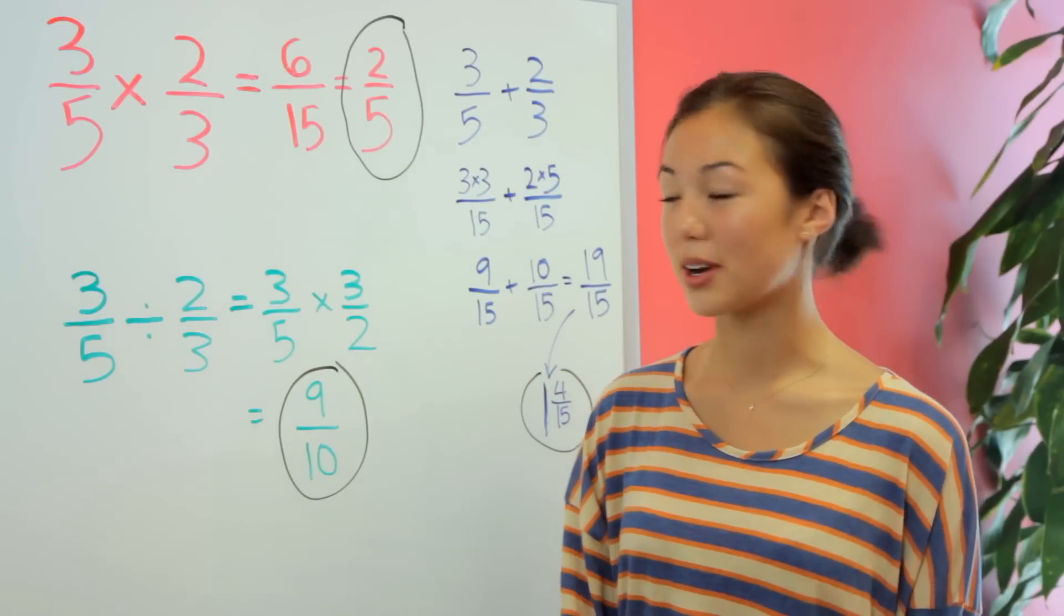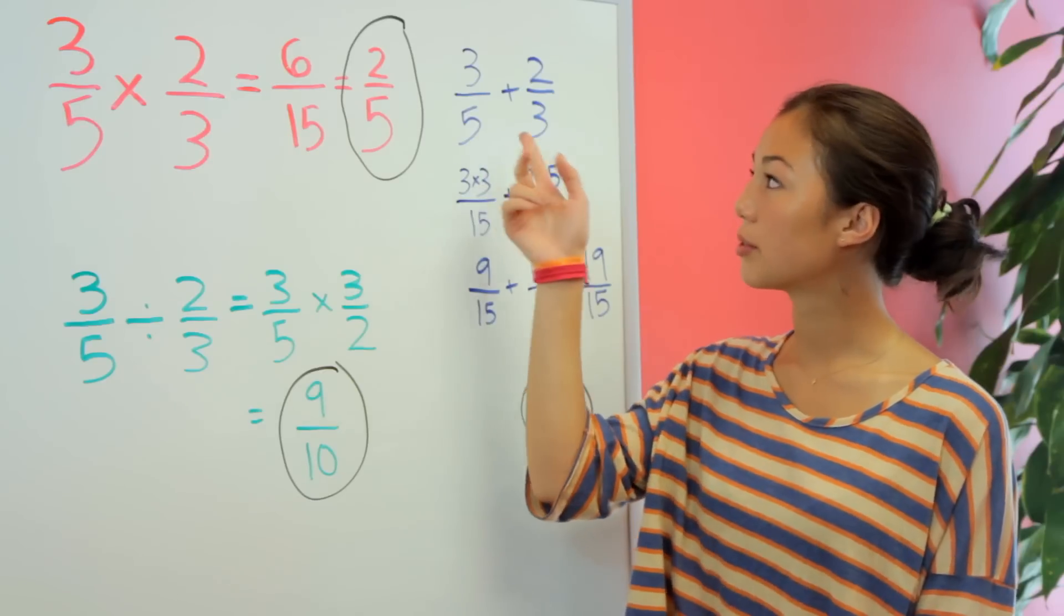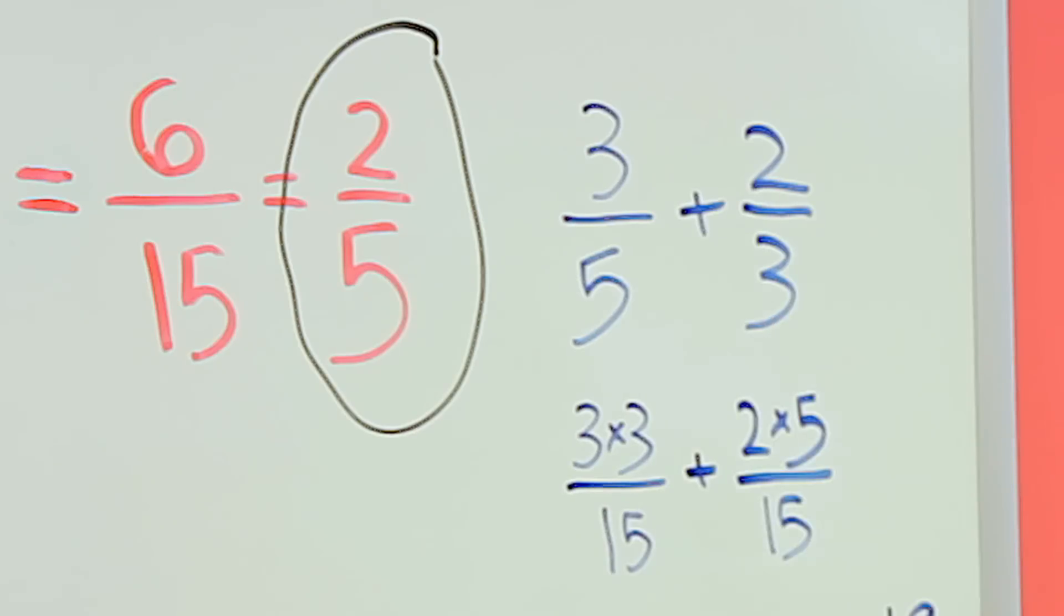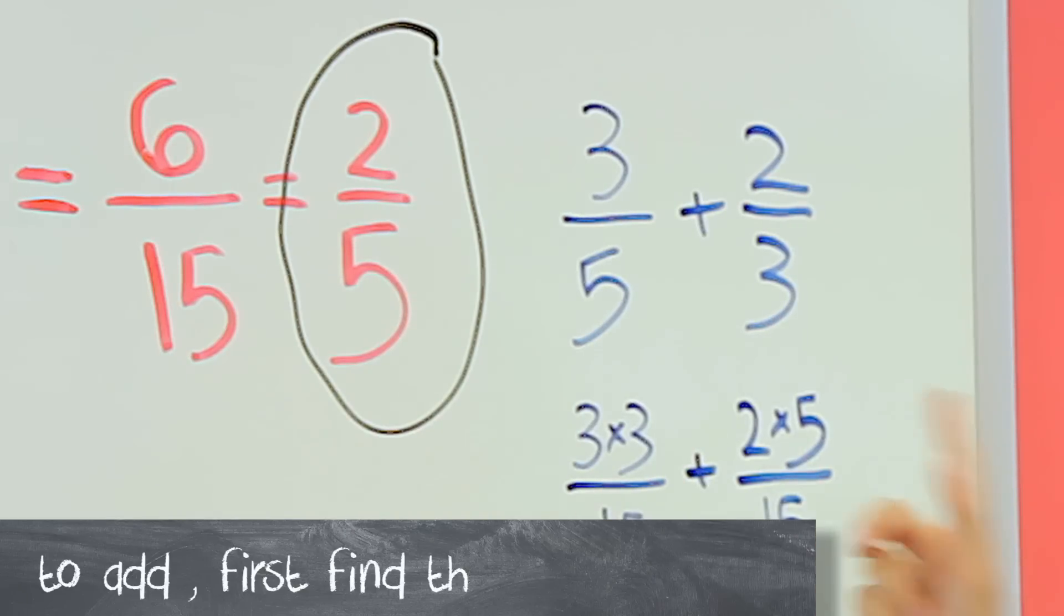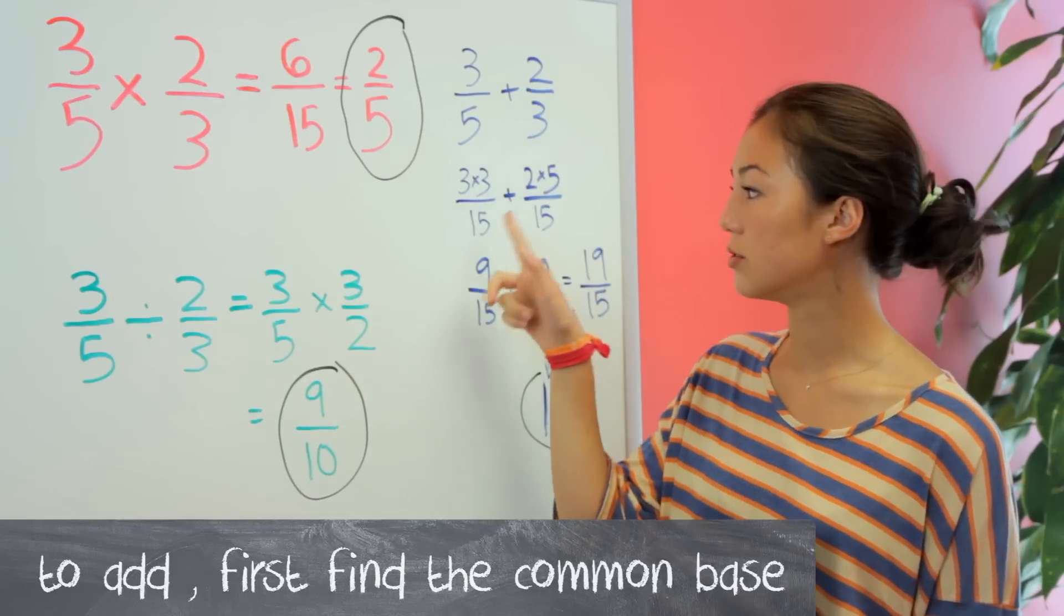Adding is a bit more complicated. So here we still have 3 fifths and 2 thirds, and to add these fractions, we're going to have to get a common base. So a common base, in this case, we could use 15.